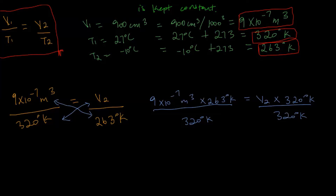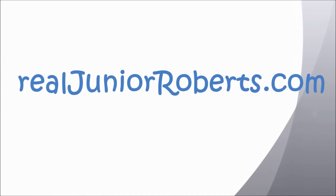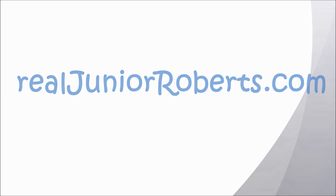Plugging this into our calculator, we get a value of V2 equal to 7.39 times 10 to the minus 7 meters cubed. So V2 equals 7.39 times 10 to the minus 7 meters cubed. You can find more great physics tutorials like these over on my website at realgeneroberts.com.